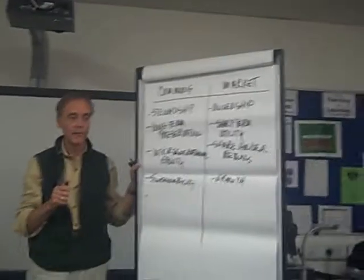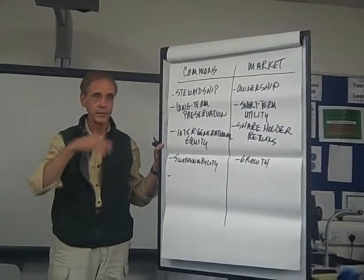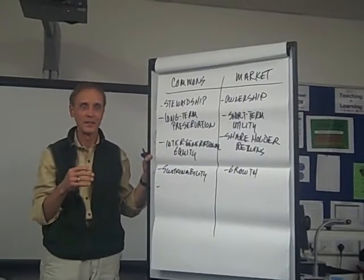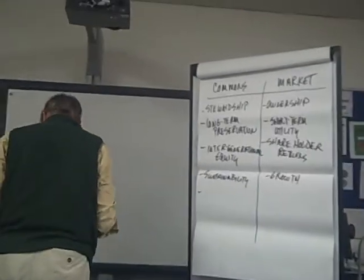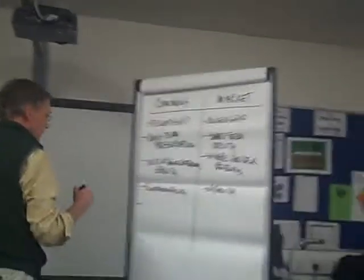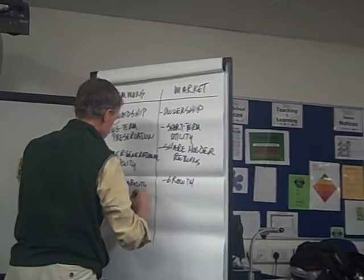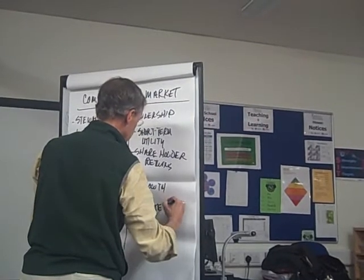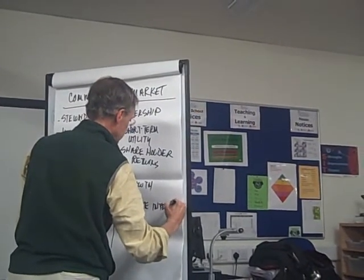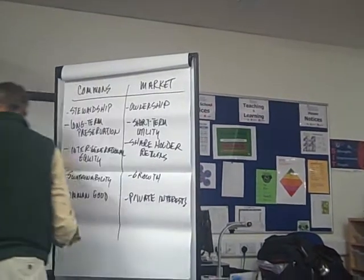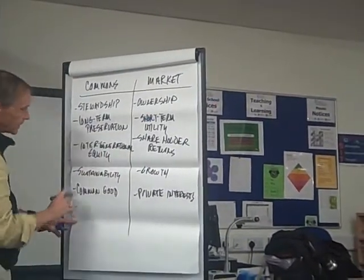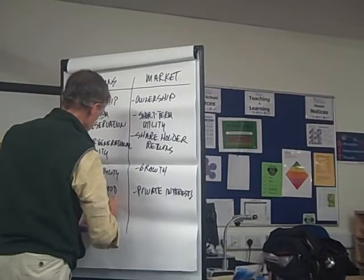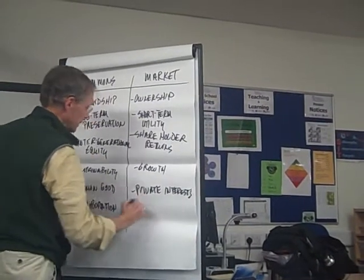We're on target for needing two to two and a half worlds within 20 years or so. The commons looks at the common good, while markets look at private interest. The modus operandi that enables the commons to achieve its goals is collaboration, whereas the market tends toward competition.